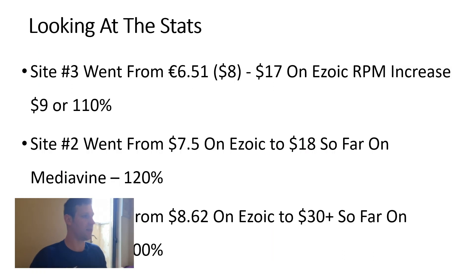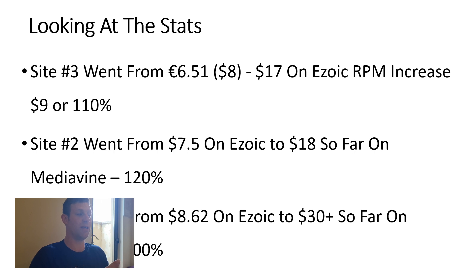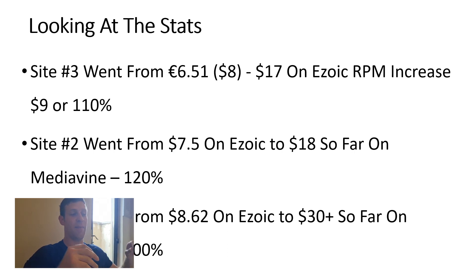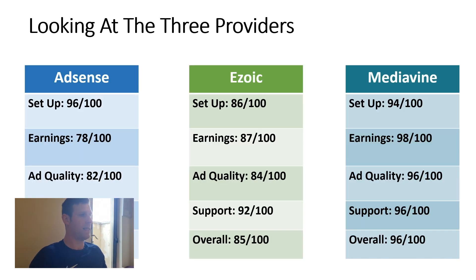Looking at the stats: site 3, our smallest site, went from an RPM of €6.51 (about $8) on AdSense to $17 on Ezoic — an increase of $9 or 110%. Site 2 went from $7.50 on Ezoic to $18 so far on Mediavine — an increase of about 120%. Site 1, our biggest site from last year, was doing an RPM of $8.62 on Ezoic and is now doing over $30 consistently on Mediavine — an increase of about 300%.